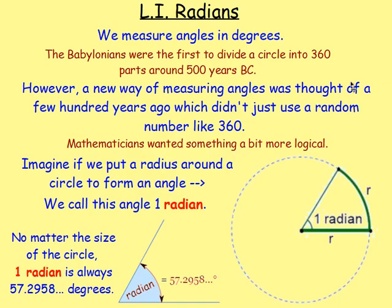Way back at the start we were introduced to radians. Up until then you measured angles in degrees, but mathematicians wanted something that was a bit more logical. So they took the radius of a circle, bent it around the outside, then joined it back up to the centre using another radius, and that formed an angle. That angle is known as one radian.